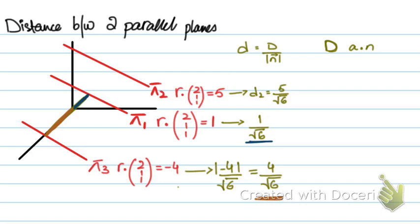And 4 over root 6 is basically this distance. So, if I have to find this entire distance, all I have to do is, let's call this distance a. So, to calculate the distance a...